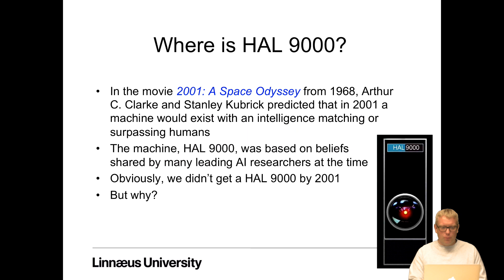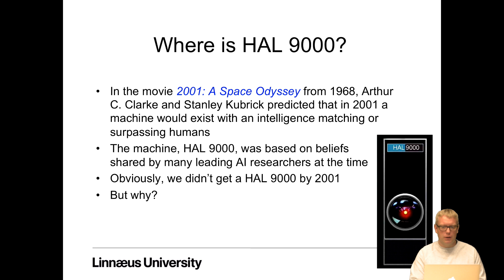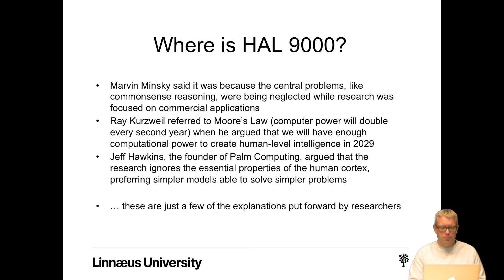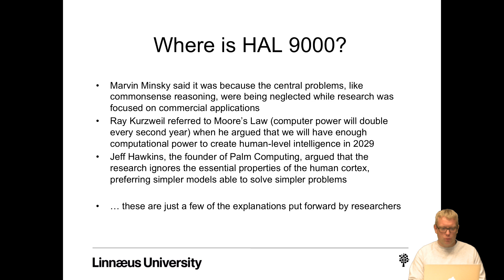A very interesting question: where is HAL 9000? In the movie 2001: A Space Odyssey from 1968, Arthur C. Clarke and Stanley Kubrick predicted that by 2001 a machine would exist with intelligence matching or surpassing humans. The machine HAL 9000 was based on beliefs shared by many leading AI researchers at the time. Obviously we didn't get a HAL by 2001. Marvin Minsky suggested it was because central problems like common-sense reasoning were neglected while research focused on commercial applications. Ray Kurzweil, referring to Moore's law — computer power doubling approximately every two years — argued we will have enough computational power for human-level intelligence by 2029.